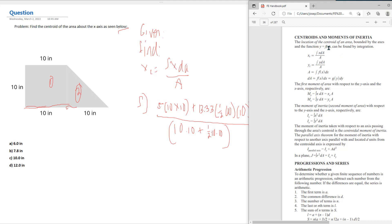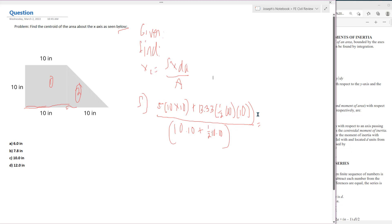This means summing the centroid of that specific area with respect to the x-axis, multiplied by the area, and then divided by the total area. Now we have everything we need to solve this problem. If we go 10 times 10 times 5, that's going to give us 500 here.